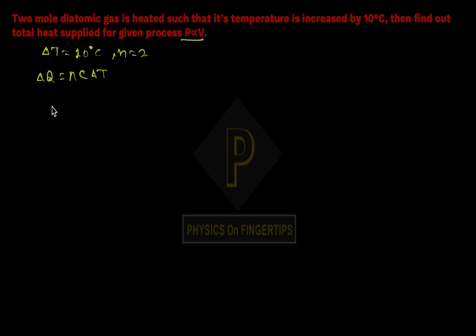To find C value, see what process is given: p is proportional to V, which means p*V^(-1) = constant. If we compare this with the polytropic process...